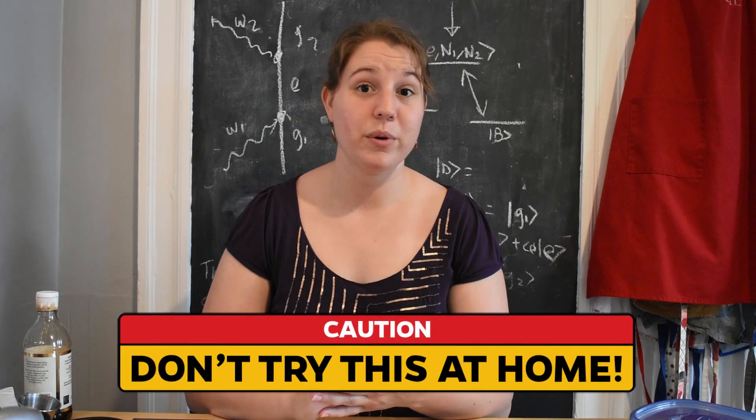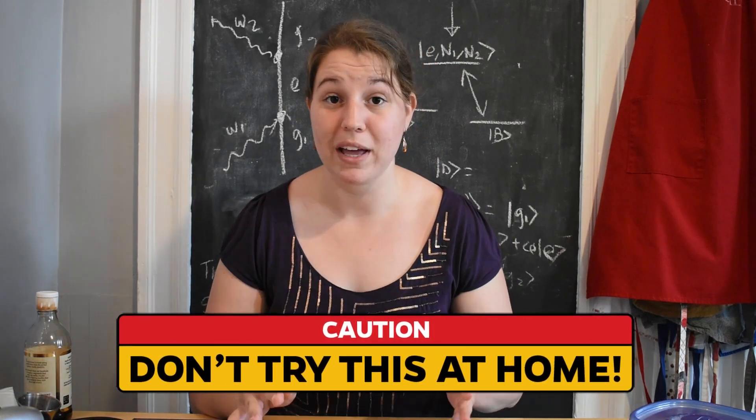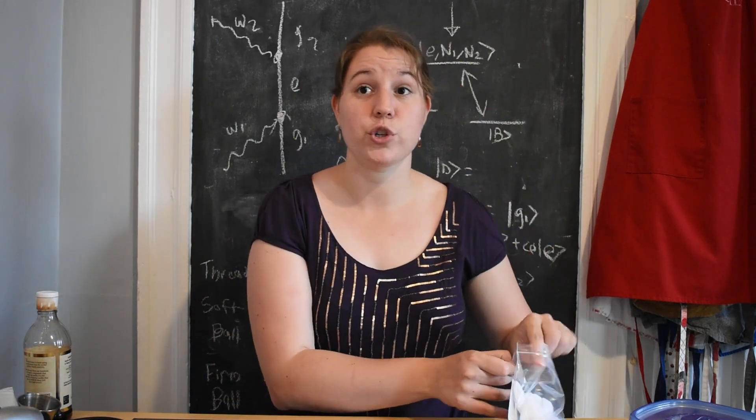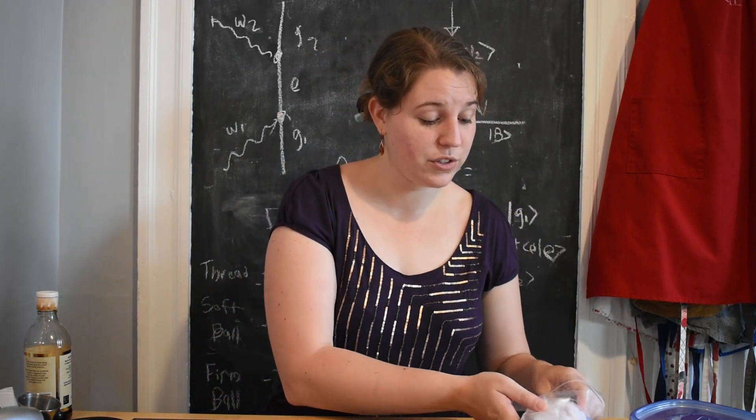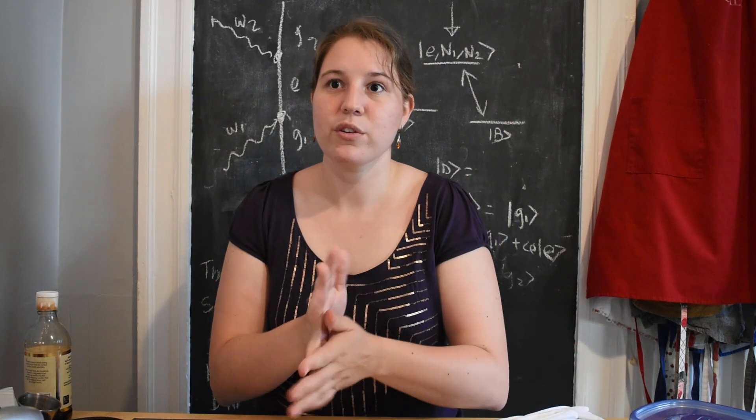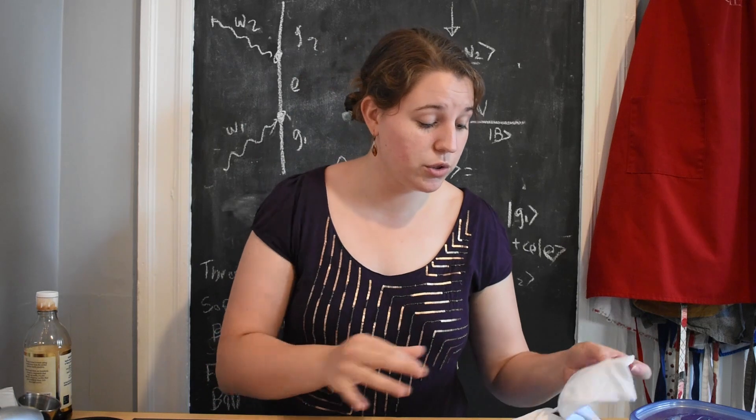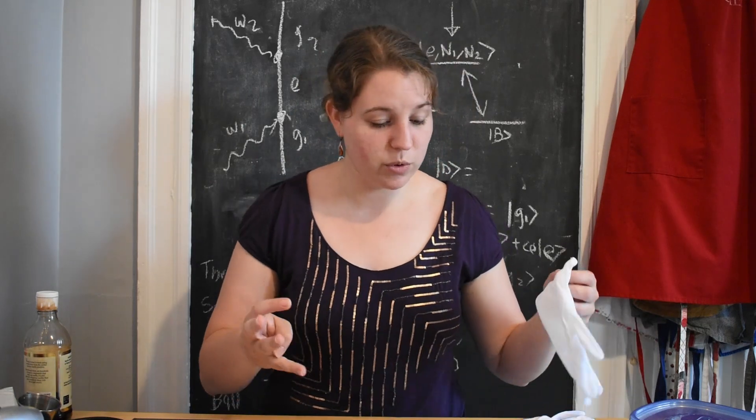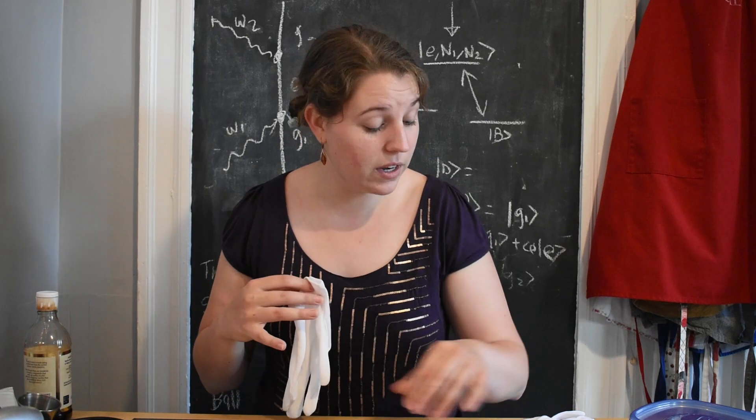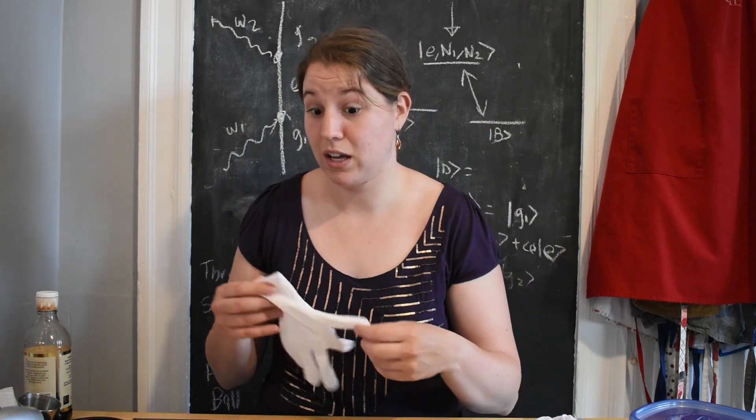So in order to do glass blowing with our isomalt, I have a few supplies that are necessary. I have gloves for handling the hot sugar. So sugar melts in above 150 degrees Celsius, usually around 160 to 180. So I have cotton gloves to insulate my hands from the heat, and then I'll also have latex gloves to keep the sugar from sticking to the cotton.